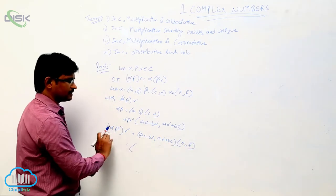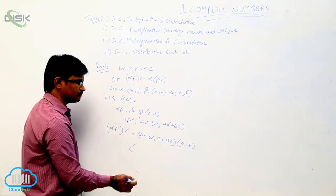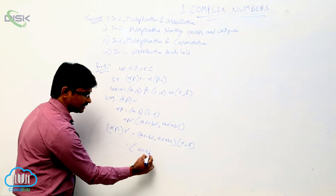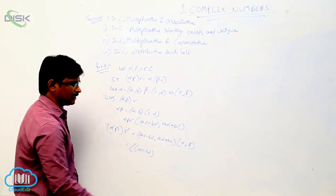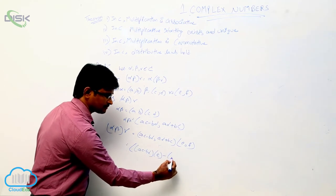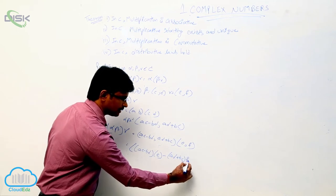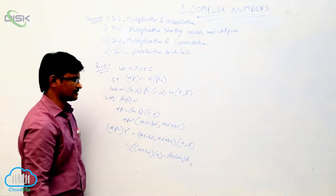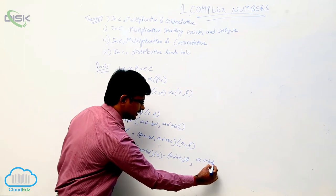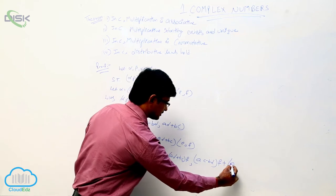Now apply this property. (ac minus bd, ad plus bc) into (e, f). This gives: first component is (ac minus bd) into e minus (ad plus bc) into f, and the second component is (ac minus bd) into f plus (ad plus bc) into e.